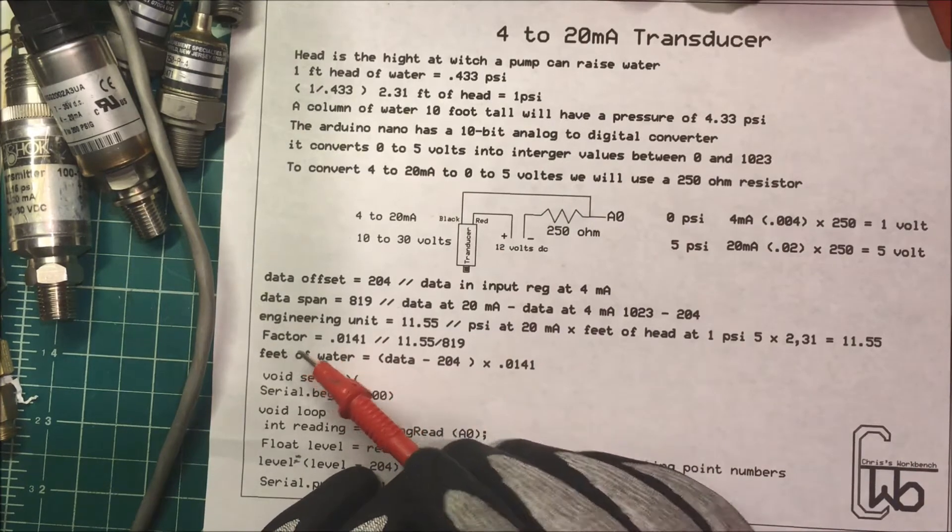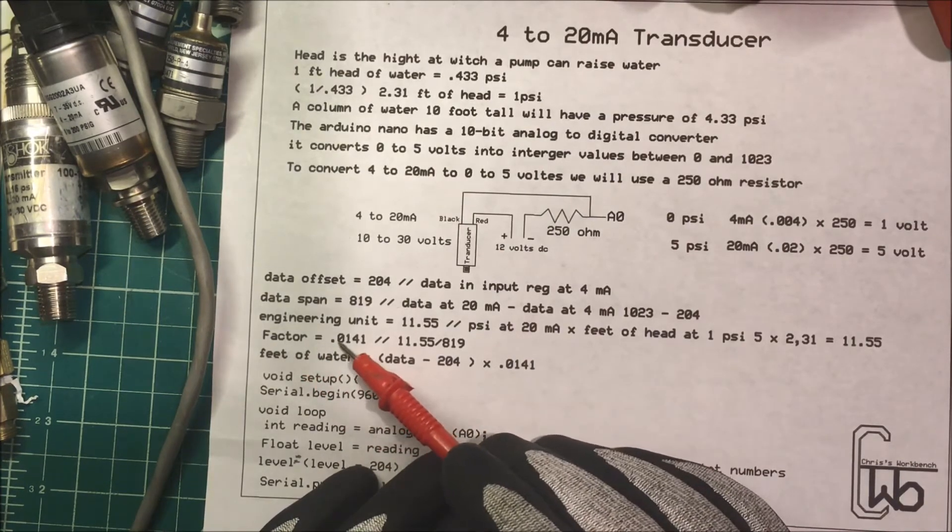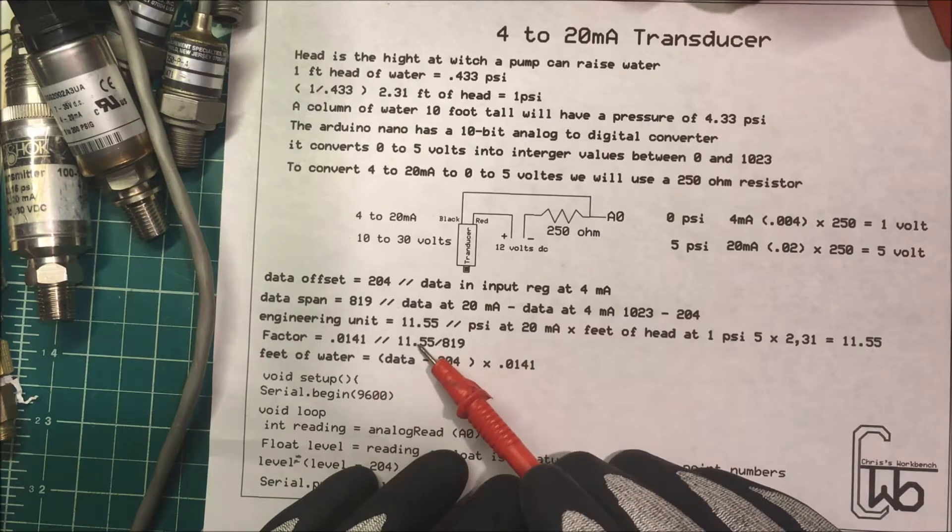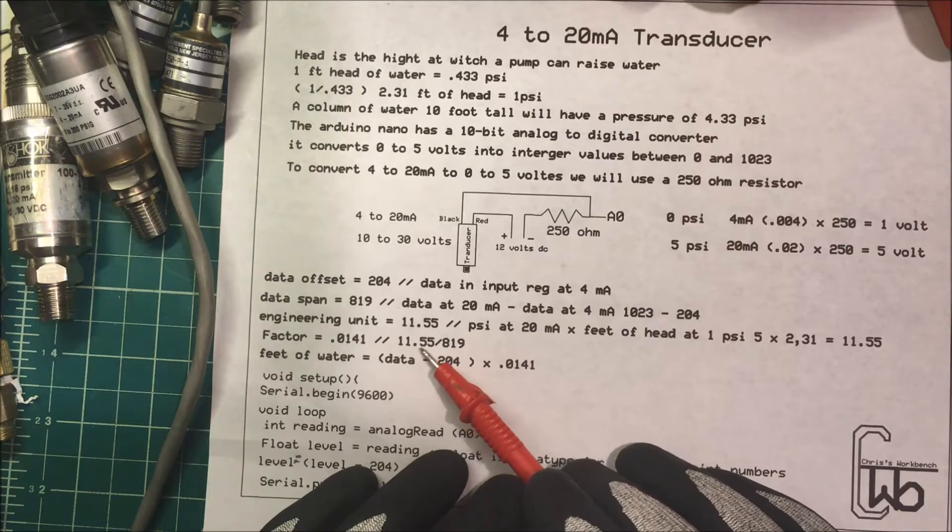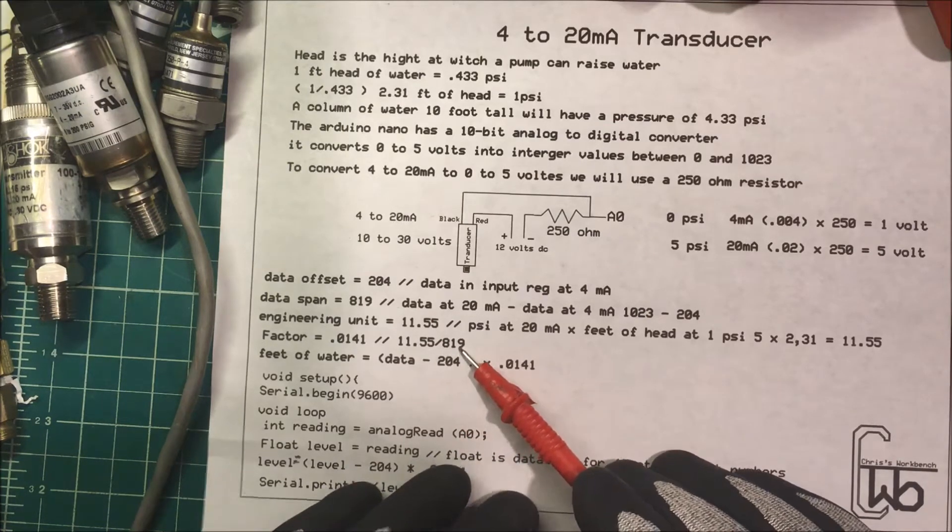Now we have a factor here and that's 0.0141, and we get that by dividing this engineering unit by our data span. 11.55 divided by 819.